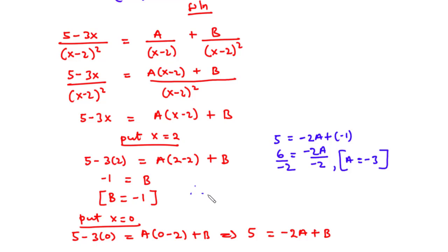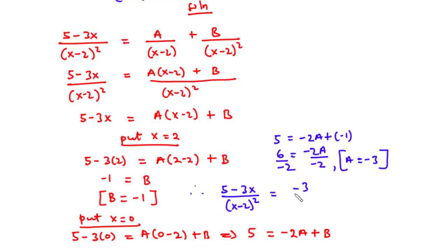Therefore, the rational function 5 minus 3x divided by x minus 2 all squared in partial fractions can be expressed as negative 3 over x minus 2 minus 1 over x minus 2 all squared.